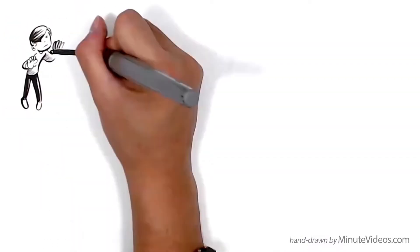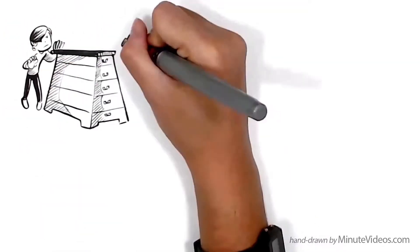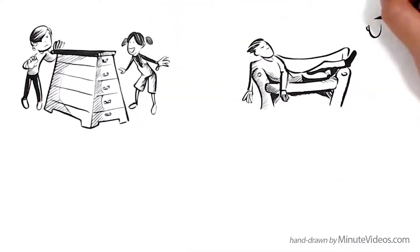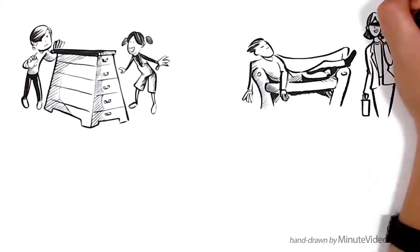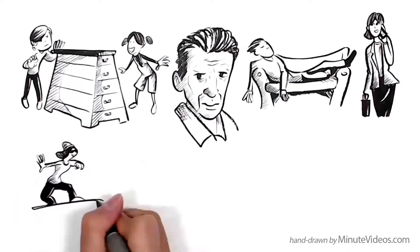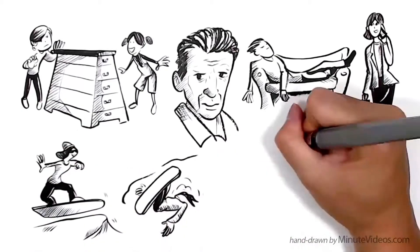A simple switch in how a person views a situation can mean the world of difference. Not just the outcome of that situation, the outcome of that person's place in life. As the late poet Samuel Beckett once said, ever tried, ever failed, no matter.